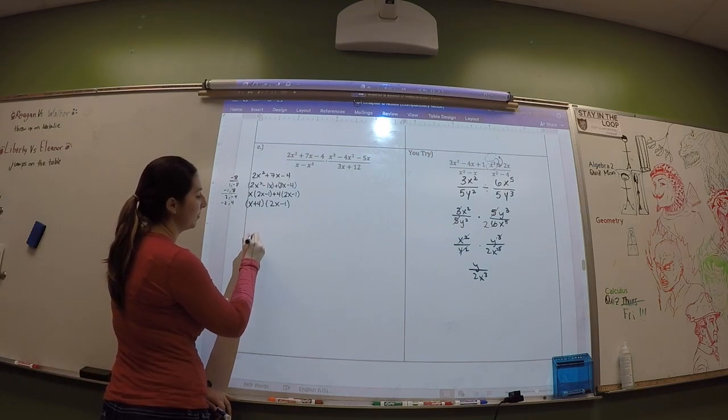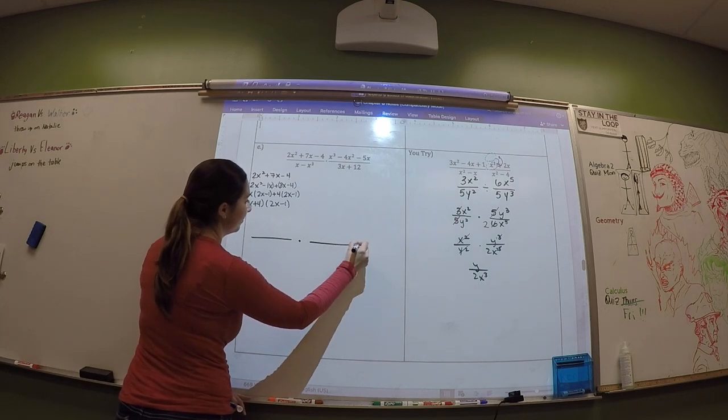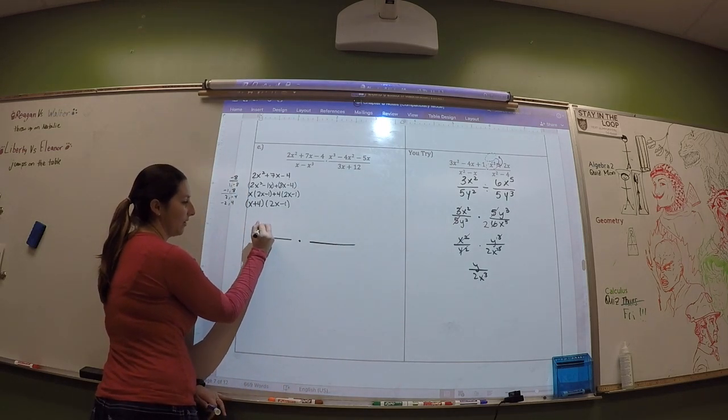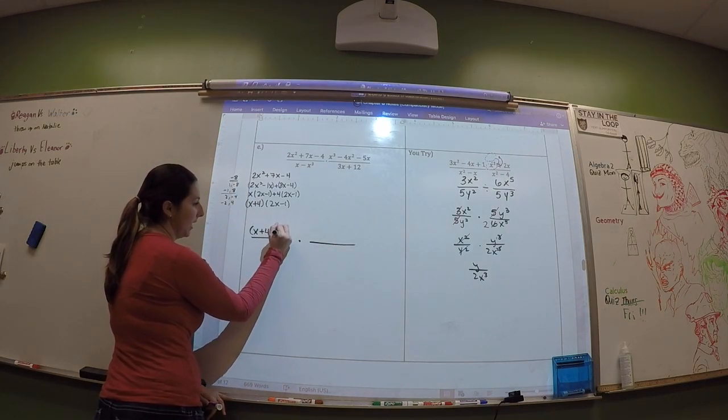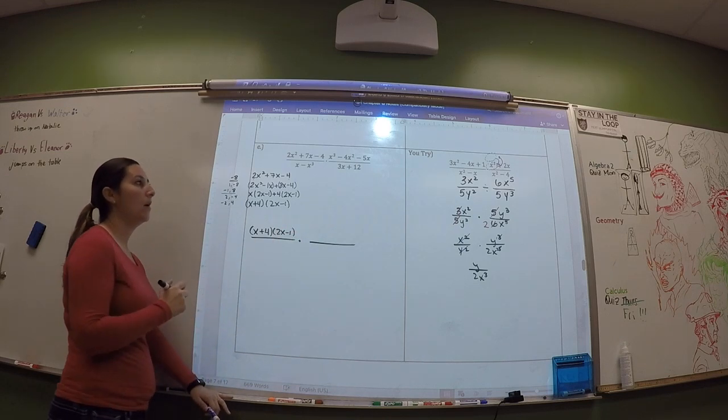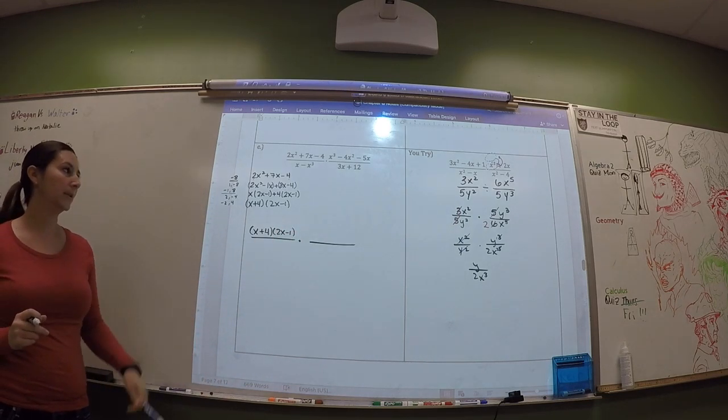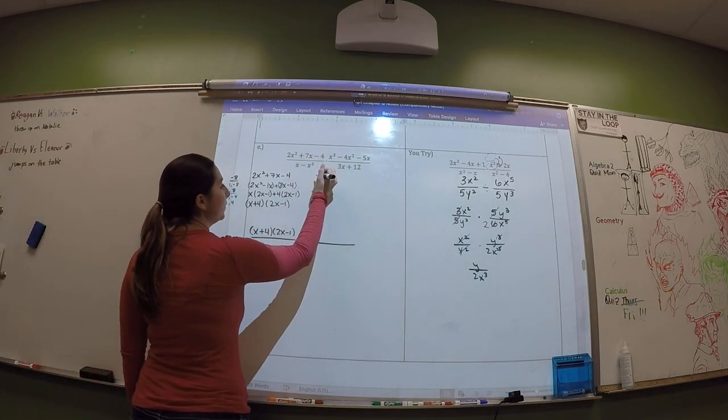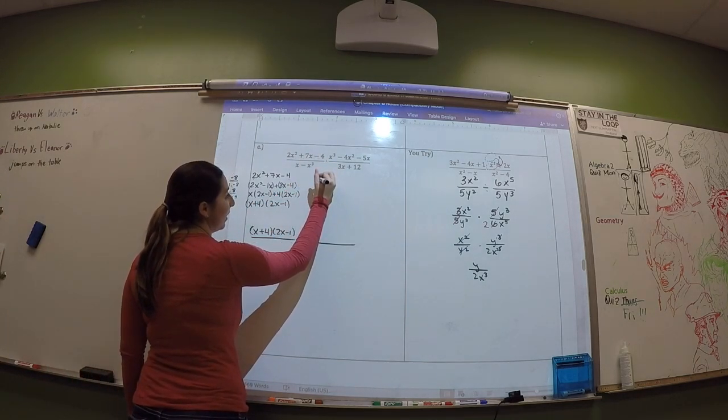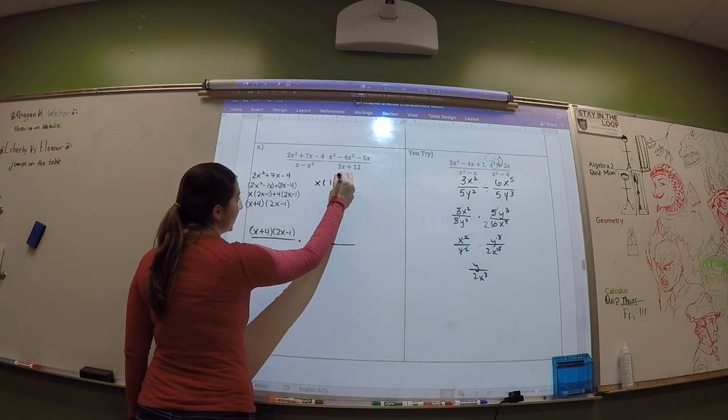So right here I'm going to put my rewritten problem. So in the numerator, I should have x + 4 and 2x - 1. The bottom, you can just factor out an x. Alright, so let's look at the bottom. First, you can factor out an x, and you get 1 - x².